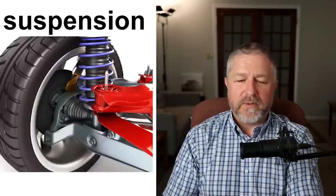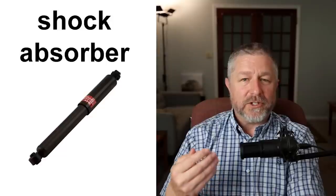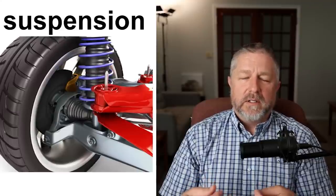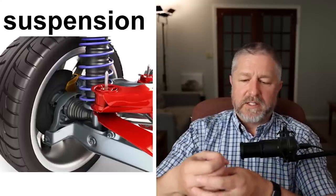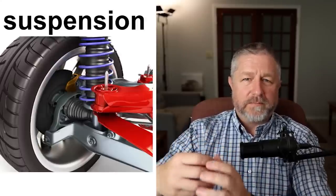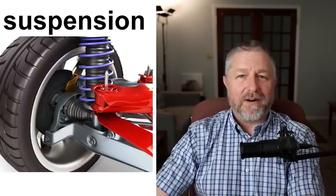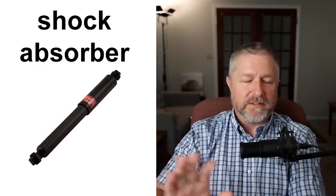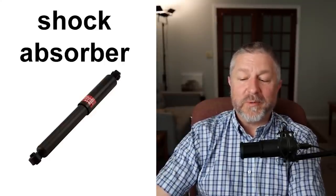Suspension is what we use to refer to everything that holds a tire on a vehicle. There are different parts though — springs and shock absorbers are in your suspension. This is a good word to know because if you get a vehicle fixed, the mechanic might say you need to replace a shock absorber or that your back suspension isn't working properly. Suspension is everything that holds the tire on, and it's what makes the car smooth to drive because of those springs and shock absorbers.